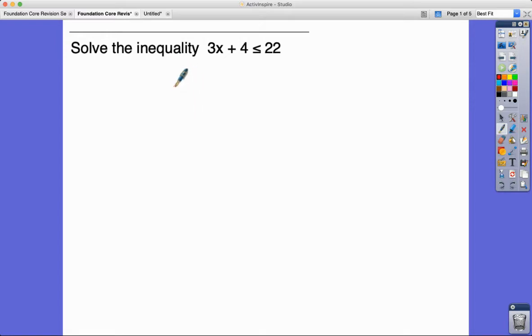I'm starting with this inequality question because a lot of candidates don't realize that these are super simple questions if you just treat it like an equation. If you are good at solving linear equations, you know if this was an equal sign here, the first thing that we would do with 3x plus 4 less than or equals 22 is we would subtract 4 from both sides.